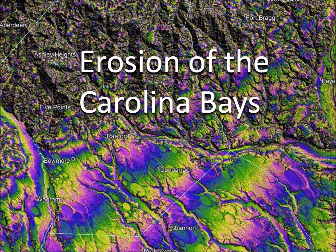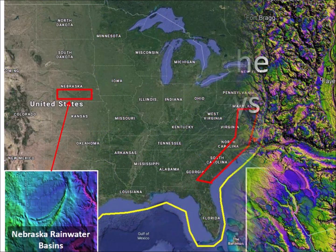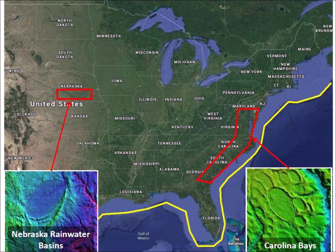Erosion of the Carolina Bays. The mathematically elliptical geometry of the Carolina Bays and the Nebraska Rainwater Basins suggests that they originated as inclined conical cavities formed by oblique impacts of glacier ice ejected by an extraterrestrial impact on the Laurentide Ice Sheet in the Great Lakes region during the Ice Age.